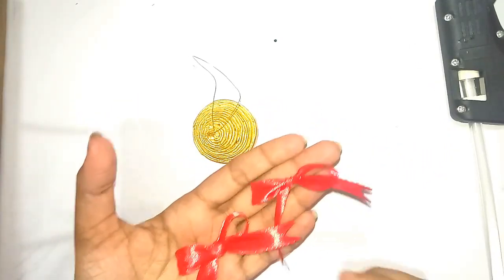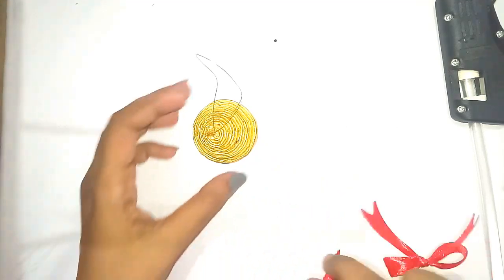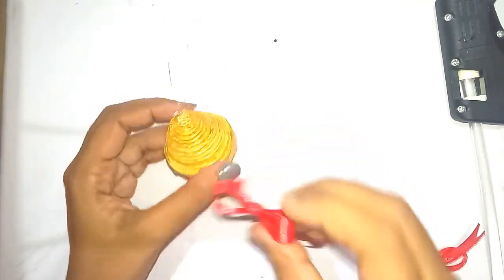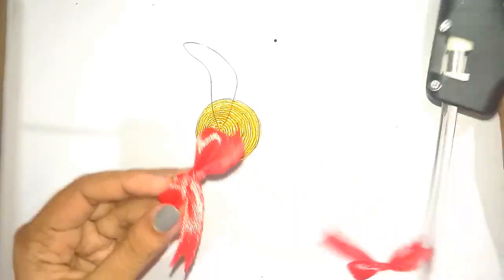I have already made two bows with satin ribbon to fix on top of the bell. I am going to stick the ribbon on top of the bell using hot glue.